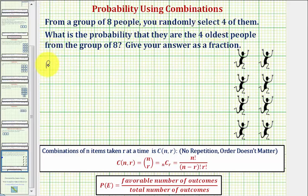So the probability of selecting the oldest group is equal to the number of favorable outcomes divided by the number of total outcomes. And again, the total outcomes is the number of ways of selecting four people from eight.